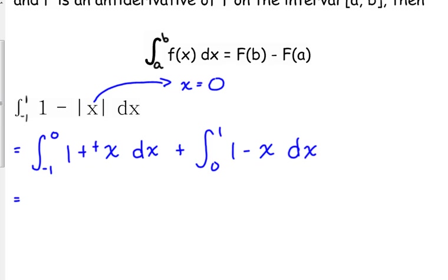So, that becomes one plus x. So, the antiderivative of that is x plus x squared over two. And that's from negative one to zero. Plus, the second piece is x minus x squared over two. And that's going from zero to one.